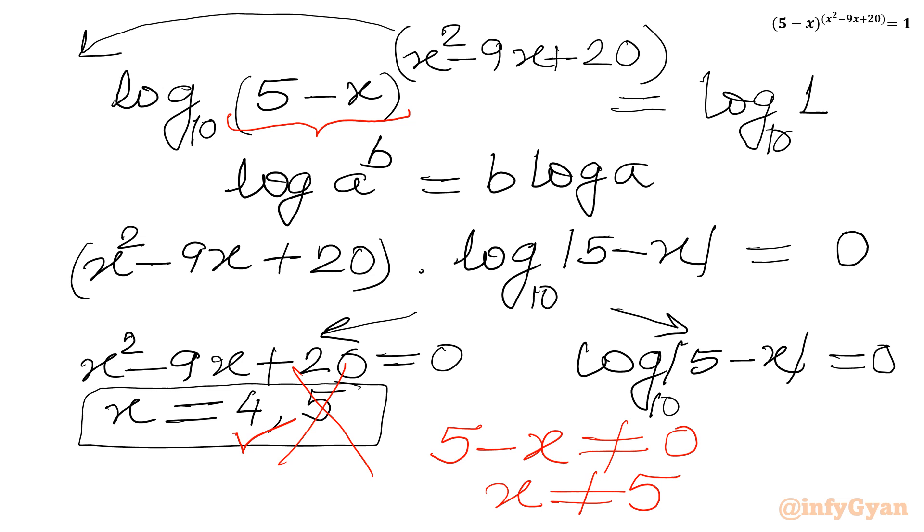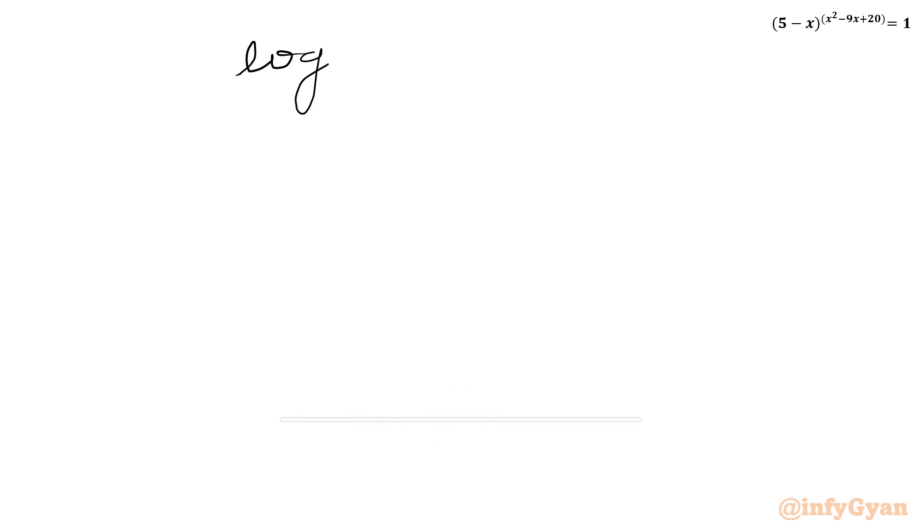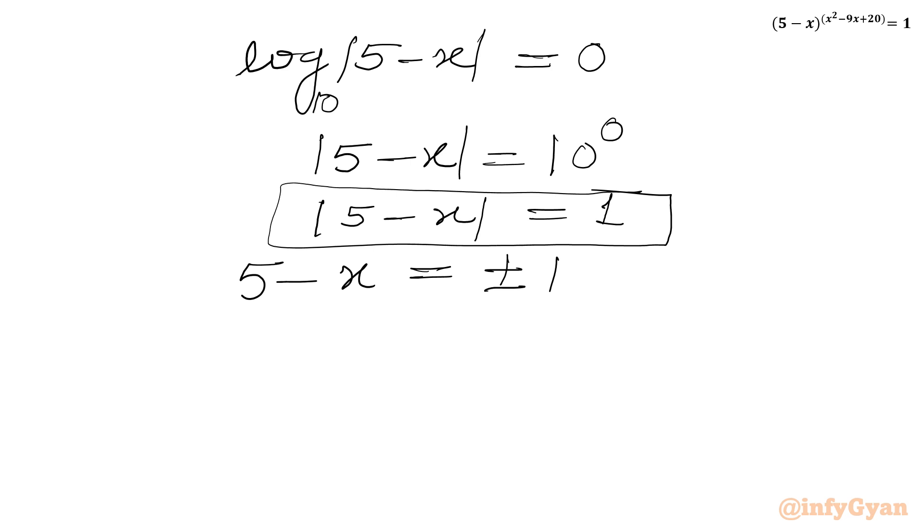Now we will solve this log equation. I will write log mod 5 minus x equal to 0. We can write this log form into exponent form. So mod of 5 minus x equal to 10 power 0. So mod of 5 minus x equal to 1. Now we know that by inspection method we can write: if 5 minus x is equal to plus or minus 1, then we will get this equation true. So I will be writing here x must be equal to 5 minus plus 1 or x will be equal to 5 minus 1. So 4, 5 plus 1, so 6.